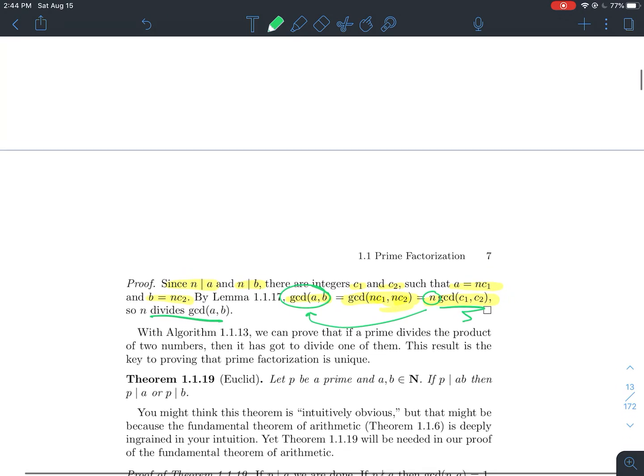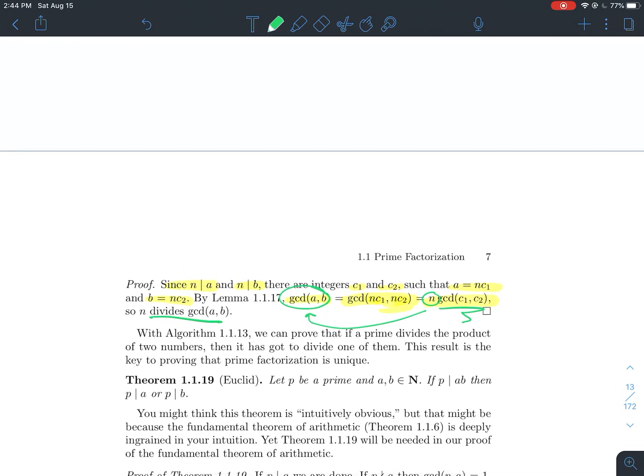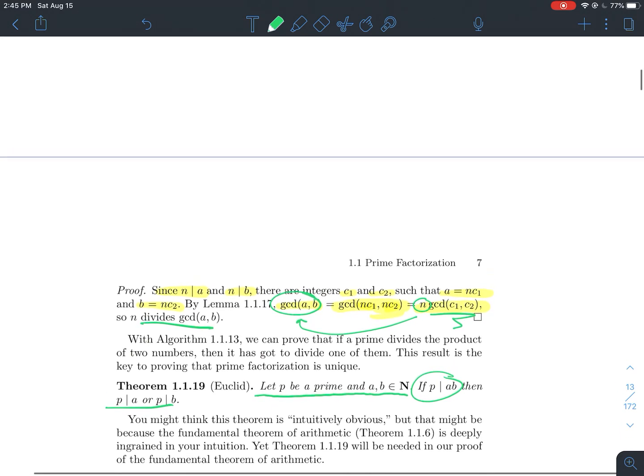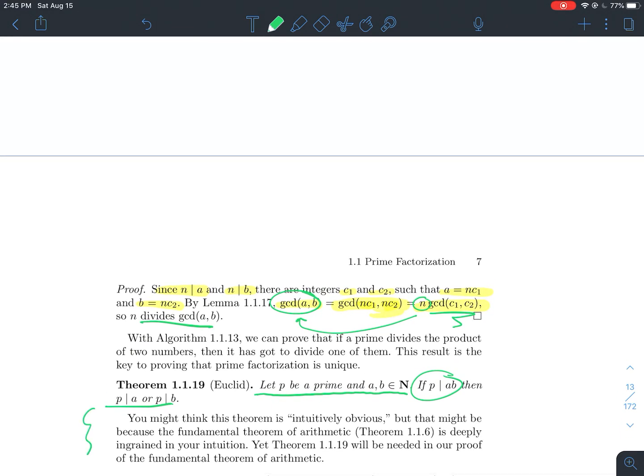Maybe one of the more important results in this section is Euclid's theorem. What's it mean to be prime? So if p is a prime, and if a and b are two natural numbers, what it means to be prime is if p divides their product a times b, then p has to divide one of the factors. p divides a or p divides b, or maybe p divides both. But it can't be possible that p doesn't divide a or b. You might think that this is super duper obvious, and that's because we've been using the fundamental theorem of arithmetic our whole life.